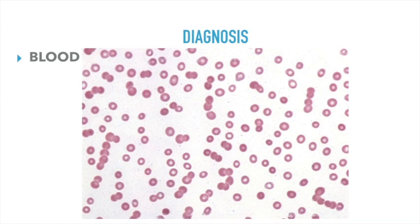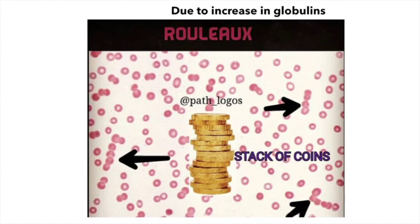When evaluating a peripheral blood smear of a case of multiple myeloma, the first thing you look for is rouleaux formation. Rouleaux formation is when the RBCs stick to one another as a stack of coins, as shown in the image. It occurs as the RBC loses its zeta potential, which is due to the negative charge on the RBC. When there is an increase in proteins such as globulins or fibrinogen, which contain a positive charge, the RBCs come close to one another and stack as coins.